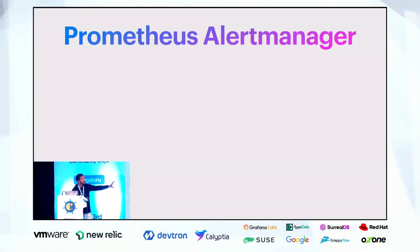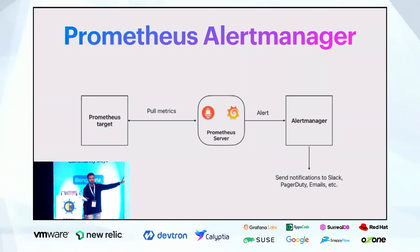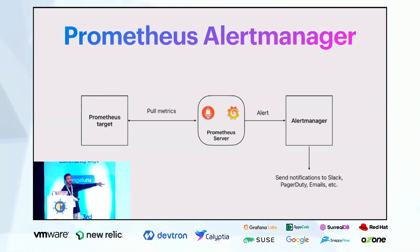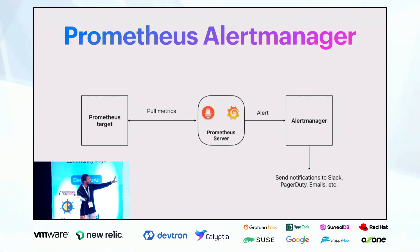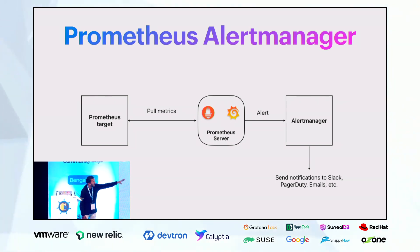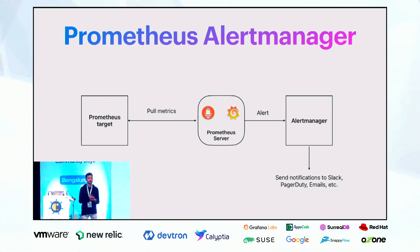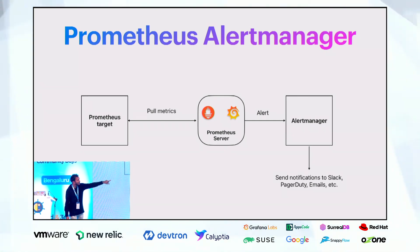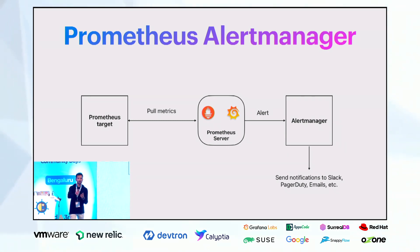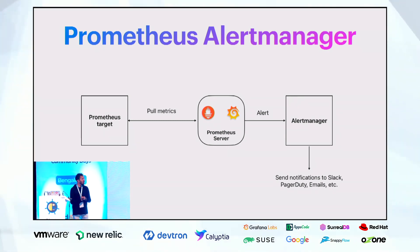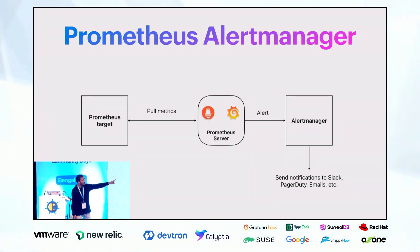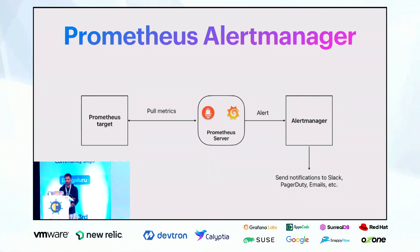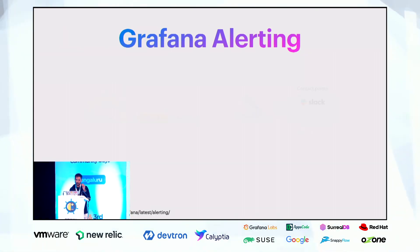Now let's look at Prometheus AlertManager for alerting. AlertManager has four important functions: routing of alerts, grouping of alerts, inhibition, and silencing. When an alert is triggered — say CPU usage is greater than 90% — AlertManager routes the alerts to Slack, PagerDuty, email, etc.